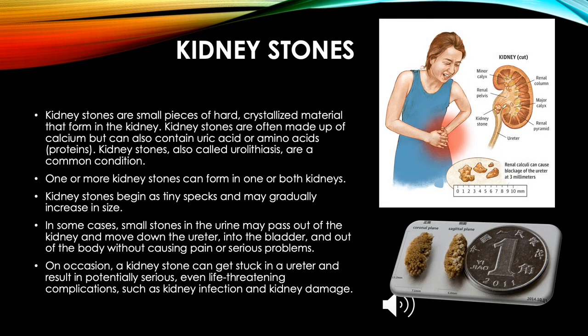Kidney stones are small pieces of hard crystallized material that form in the kidney. They are often made up of calcium but can also contain uric acid or amino acid proteins. Also called urolithiasis, they can form in one or both kidneys, beginning as tiny specks and gradually increasing in size. Small stones may pass through the ureter into the bladder and out of the body without pain. However, a stone stuck in the ureter can cause serious complications including kidney infection and kidney damage.